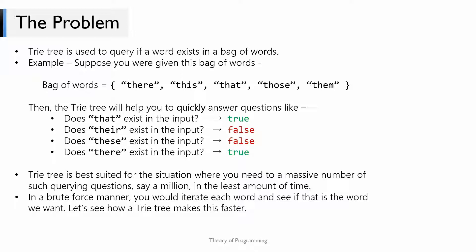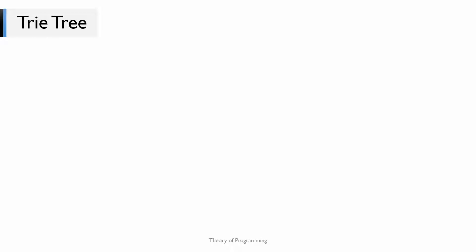The Trie tree will help you answer questions like these very quickly, so it is best suited in situations where you have to answer like a million of these queries. Think about it — how would you answer these queries in a brute force manner? You would have to iterate each word in the bag of words and see if that's the word we want. That is pretty slow, so let's see how a Trie tree makes this faster.